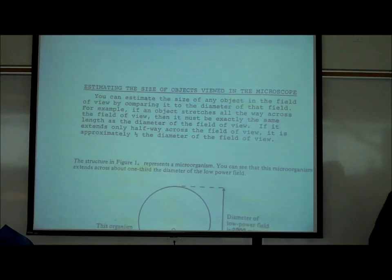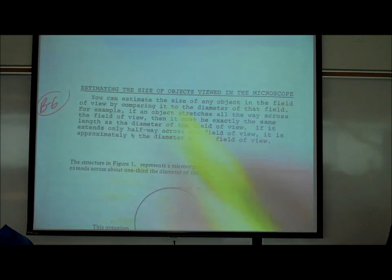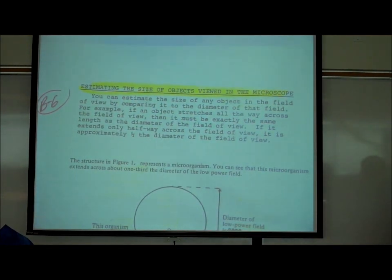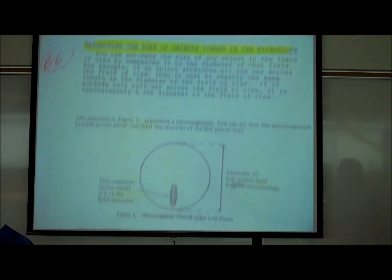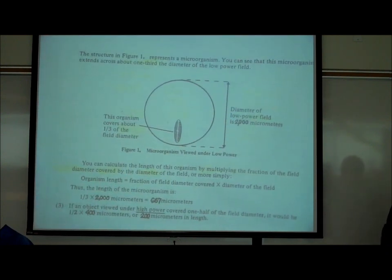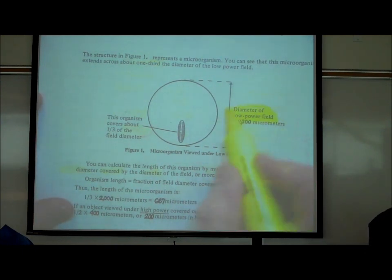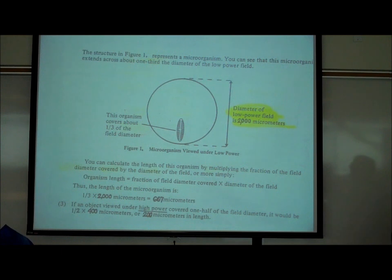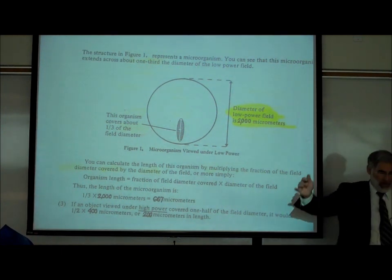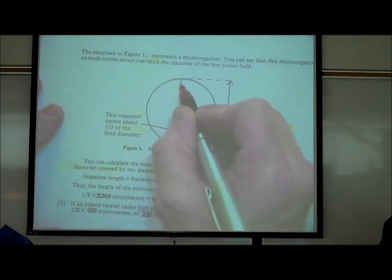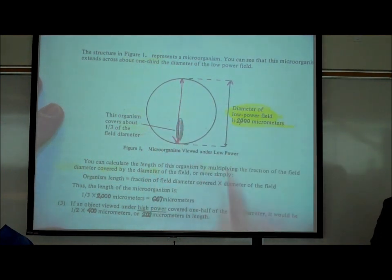On page B6, we're going to learn how to estimate how big objects are that we see under the microscope. Using the picture on B6 as an example — let's imagine we're looking at something under the microscope at low power magnification, and the diameter of the field of view is 2,000 micrometers.